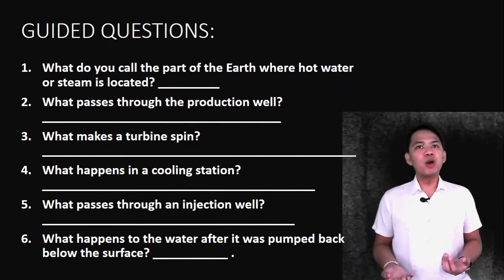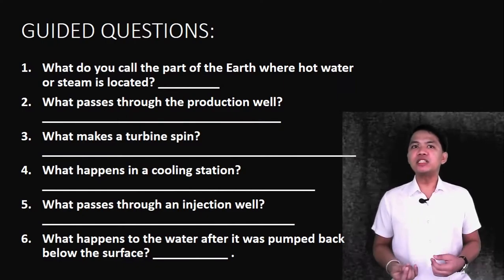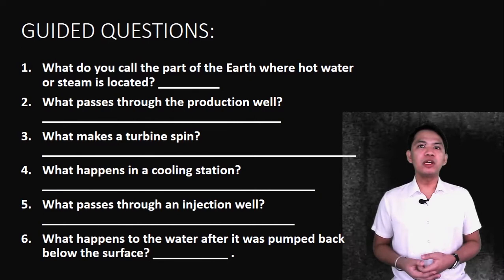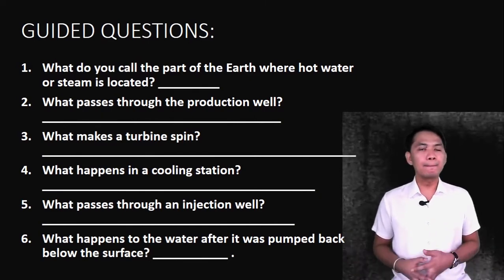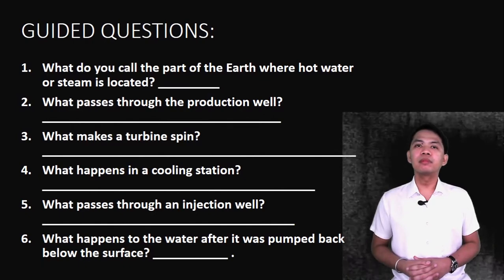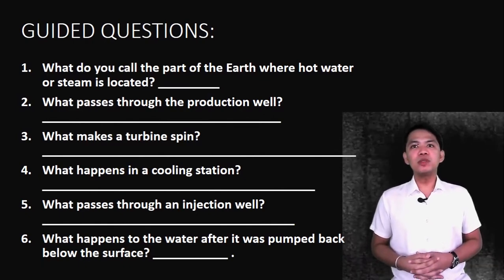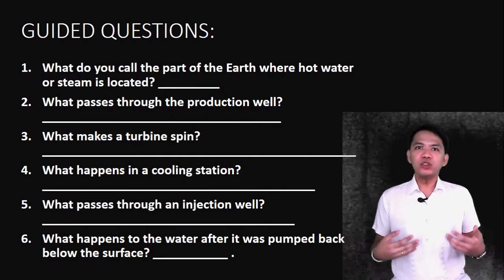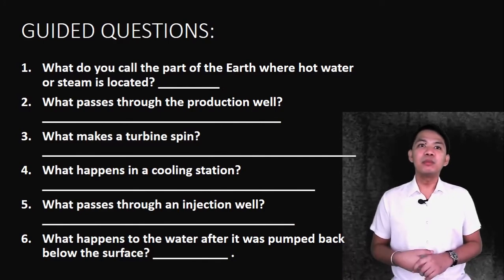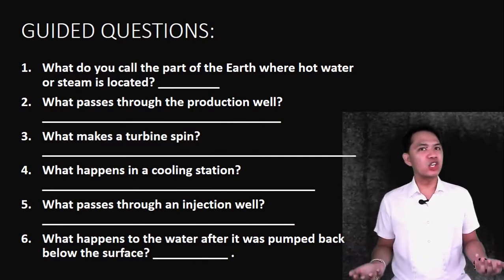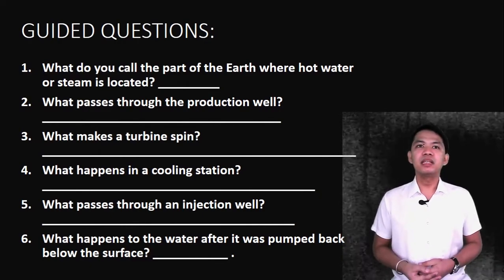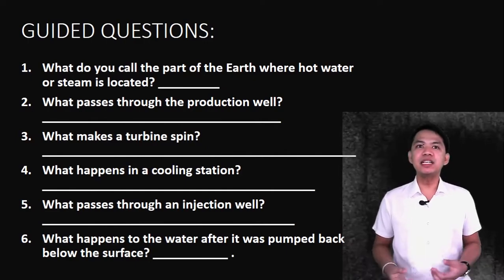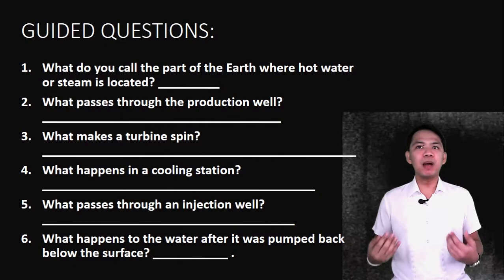Now, get your ballpen and paper and let's try to answer the following questions. Number one, what do you call the part of the earth where hot water or steam is located? Number two, what passes through the production well? Number three, what makes a turbine spin? Number four, what happens in a cooling station? Number five, what passes through an injection well? And number six, what happens to the water after it was pumped back below the surface?